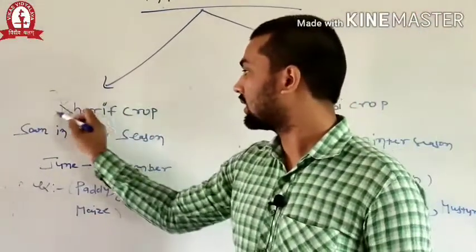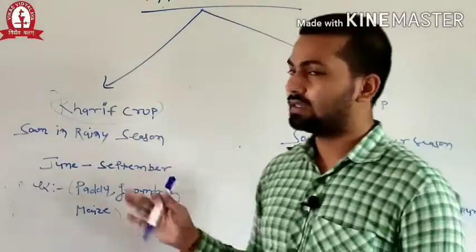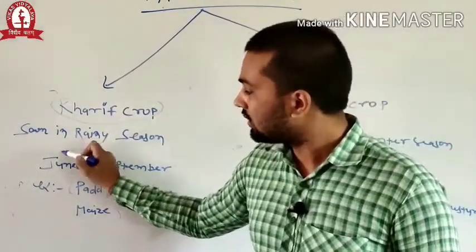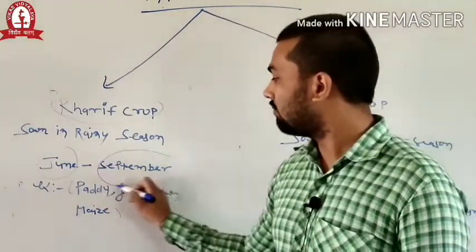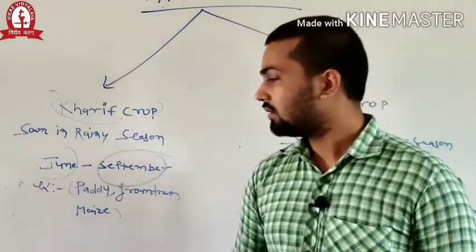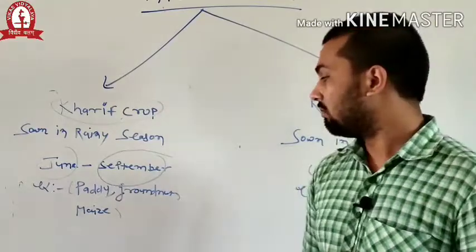Now we will discuss what is Kharif crop. A crop which is sown in the rainy season. Crop which is sown generally in the month of June or July and harvested around September is known as the Kharif crop. Some examples of Kharif crop we have paddy, groundnut and maize.